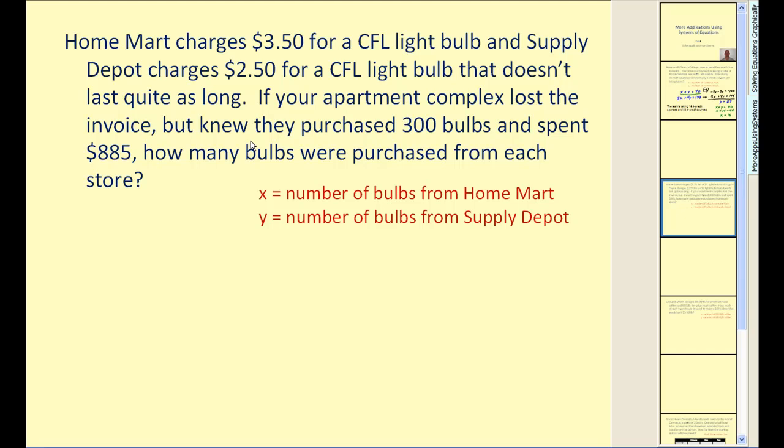Let's go and take a look at this example. Homemark charges $3.50 for a CFL light bulb and Supply Depot charges $2.50 for a CFL light bulb that doesn't last quite as long. If your apartment complex lost the invoice but knew they purchased 300 bulbs and spent $885, how many bulbs were purchased from each store? So again, we'll identify our variables. Let's let x equal the number of bulbs from Homemart and y equal the number of bulbs from the Supply Depot. Since we know we purchased 300 light bulbs, we should be able to conclude that x plus y must equal 300.